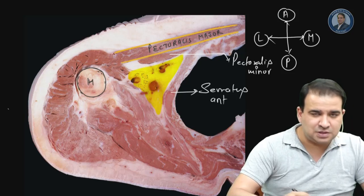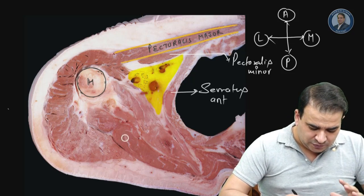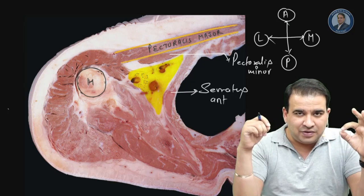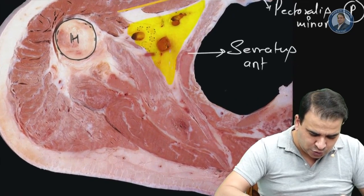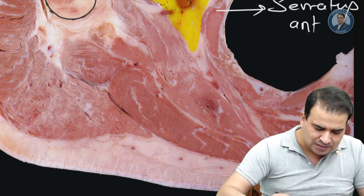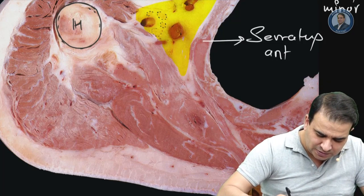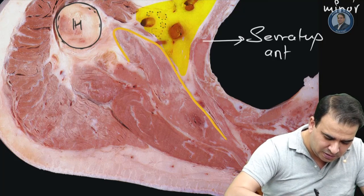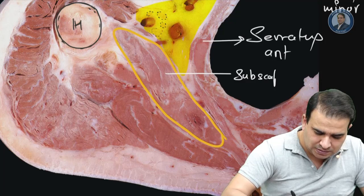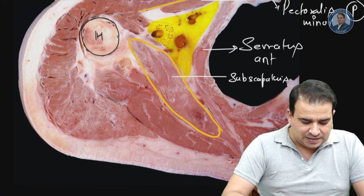So pectoralis major and pectoralis minor are the two muscles forming the anterior axillary fold or the anterior wall of the axilla. Coming to the posterior aspect: it is a bit difficult to identify the scapula because it is very thin in cross-section. But if you enlarge the picture, you can see the scapula bone here. The large muscle coming from the subscapular fossa — that is the subscapularis muscle — this big muscle is all subscapularis.